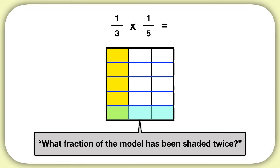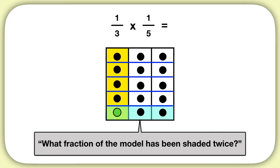What fraction of this model has been shaded twice? We can see this one piece right here, and it's out of a total of 15. So as a fraction, one-fifteenth of this model has been shaded twice. That's our answer.